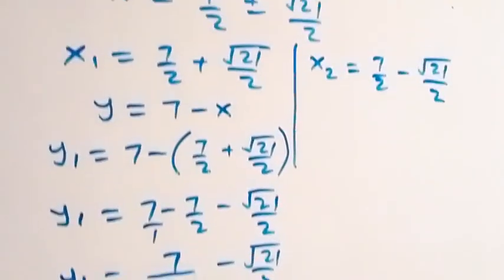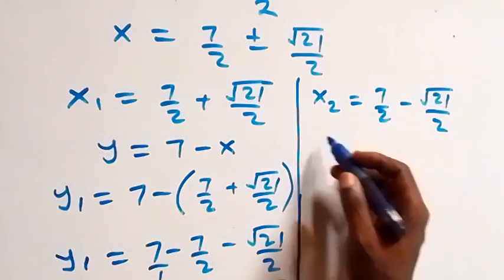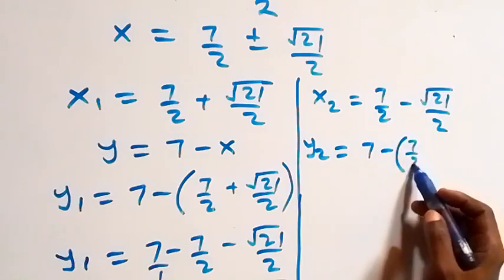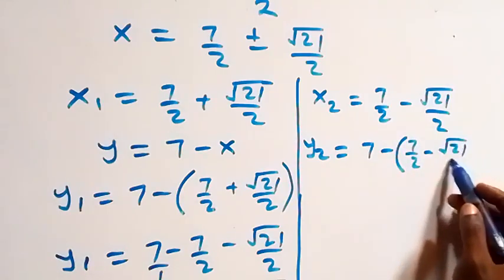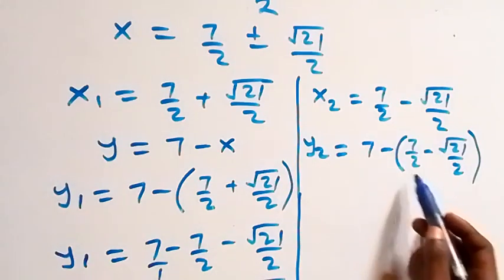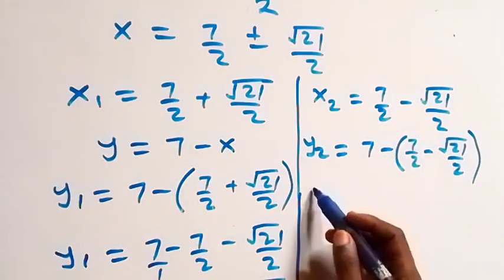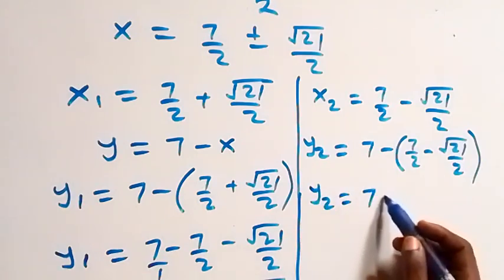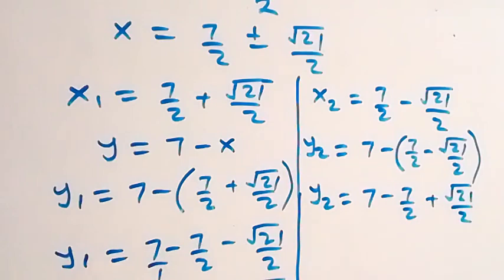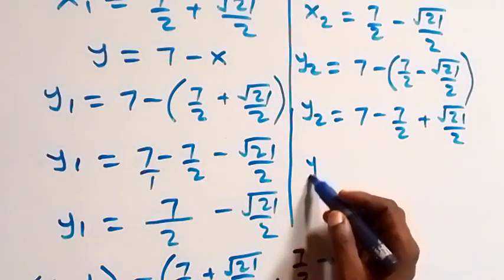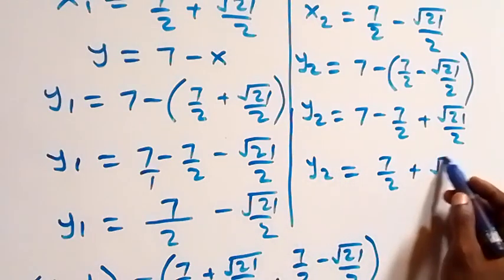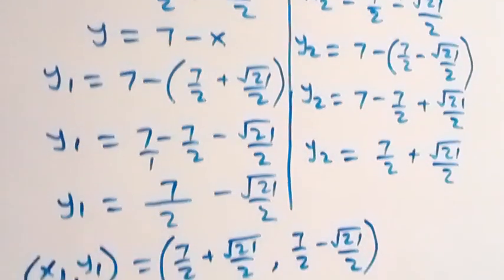Also, y₂ equals seven minus x₂, which is seven minus (seven over two minus root 21 over two). Opening the bracket: y₂ equals seven minus seven over two plus root 21 over two. That gives y₂ equals seven over two plus root 21 over two.